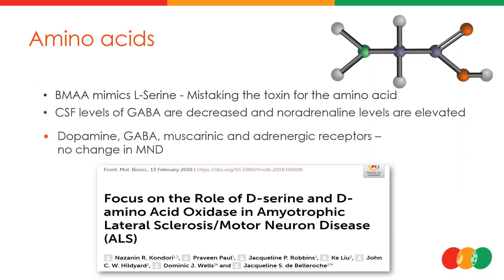BMAA mimics one amino acid specifically — L-serine. The body mistakes the toxin for the amino acid, so this toxic amino acid mimic circulates through the body, leading to further neurotoxicity. There is therefore great scope for the use of D-serine and glycine as therapeutic agents in motor neuron disease and ALS patients.